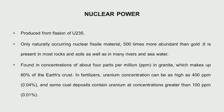Nuclear power is produced from the fission of uranium-235. Uranium is 500 times more abundant than gold and is present in rocks, soils, and water. In granite, it is about 4 parts per million, and granite makes up nearly 60% of the Earth's crust. In fertilizers, uranium concentrations can be as high as 400 ppm, and coal deposits have concentrations greater than 100 ppm, because all are dug from under the earth and contain uranium, thorium, and potassium.